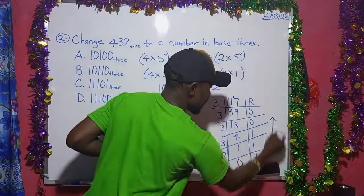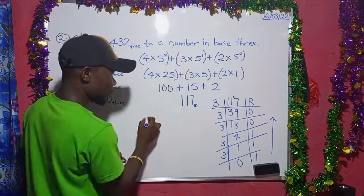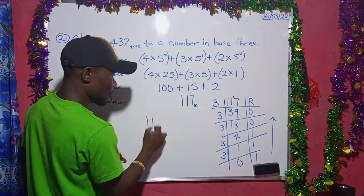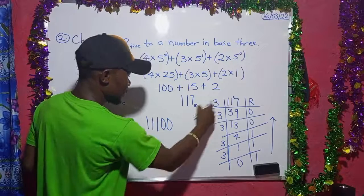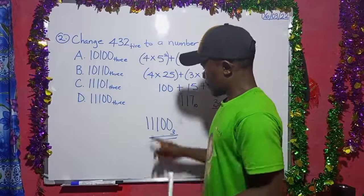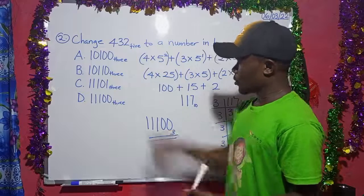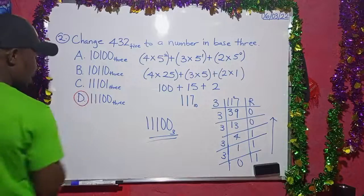So we can take our answer from down going up. So we will have 11100 base 3. So we can look in the options there. This is our answer. Thank you.